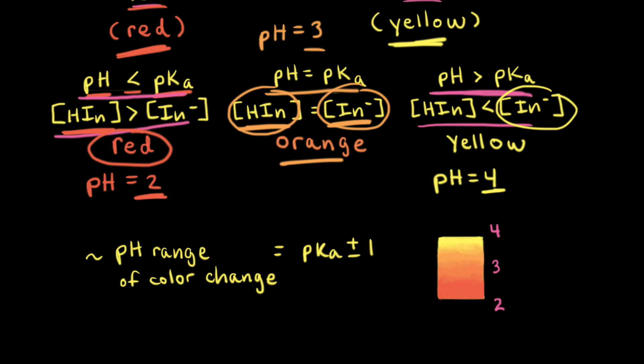Let's think about the pH range of the color change for this hypothetical indicator. The approximate pH range over which an indicator changes color is equal to the pKa value plus or minus 1. The pKa value for our hypothetical indicator is equal to 3. Therefore, 3 + 1 = 4 and 3 − 1 = 2, so 2 to 4 is the approximate pH range over which our indicator changes color.